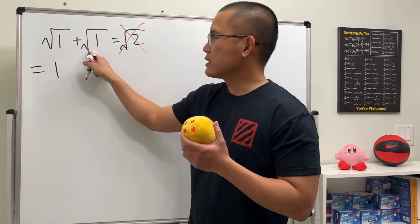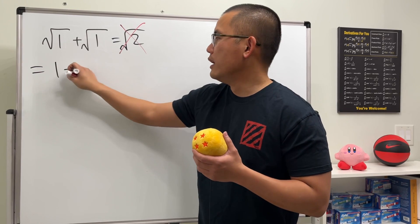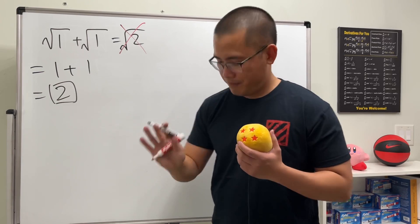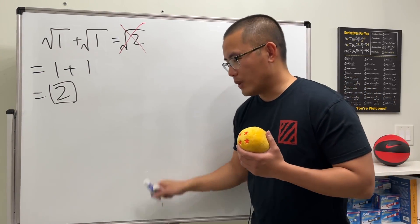Here is how we do it. Square root of 1 is just equal to 1, and square root of 1 is of course just equal to 1. And of course, 1 plus 1 is equal to 2, and we are done. But no, no, no. This is the reason why I want to talk about this.